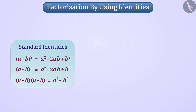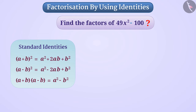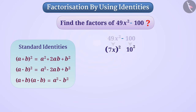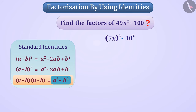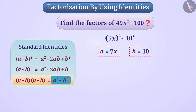Now pause the video and find the factors of 49x² - 100. We can write 49x² as (7x)² and 100 as 10². In this way, both terms of this expression are perfect squares. It corresponds to the right side of the identity (a + b)(a - b) = a² - b², where a = 7x and b = 10. Therefore, using the third identity, we can factorize the given expression as (7x + 10)(7x - 10).